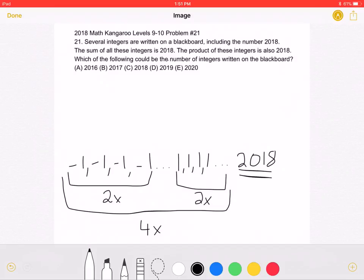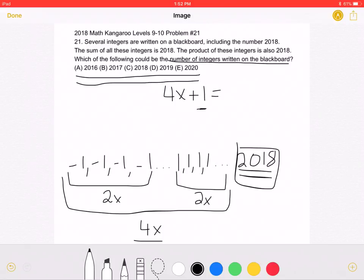Since the question is asking for the number of integers written on the blackboard, we can find this number out by stating that 4x, which is the number of 1s and negative 1s, plus 1 number, which is 2018, must be equal to one of these answer choices. We can also do this problem by stating that one of these answer choices, minus 1, when divided by 4, gives an integer.